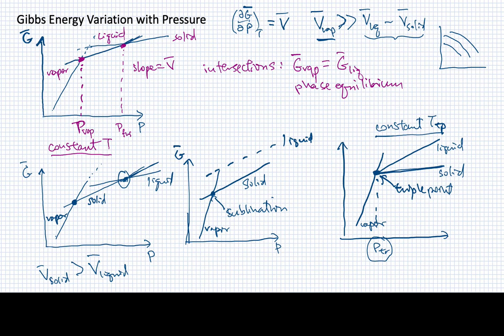But you can see that the structure, the shape of this triple point, is a little different than the shape that we had seen before when we graphed all of the molar Gibbs energy versus temperature. In this case, we have a very different looking graph, but it's also characterized by having all three of these curves intersect at the same point.